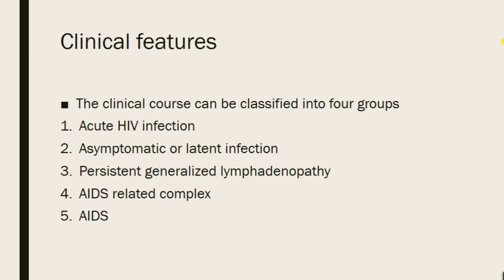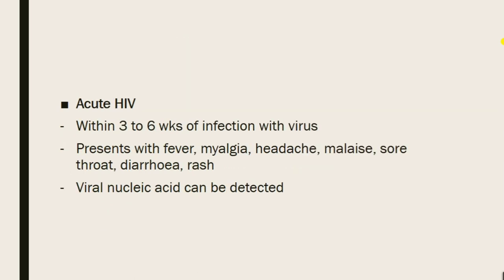The clinical features of infected patients include: acute HIV infection, asymptomatic or latent infection, persistent generalized lymphadenopathy or PGL, AIDS-related complex, and the final stage which is acquired immunodeficiency syndrome. The first stage, acute HIV infection, starts within three to six weeks of infection and presents with fever, myalgia, headache, malaise, sore throat, diarrhea, and rashes. At this stage viral nucleic acid can be detected from patient samples.